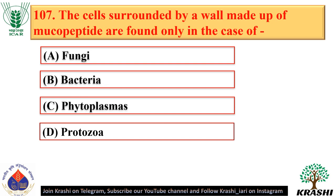Question number 107. Cells surrounded by a wall made up of mucopeptide are found only in bacteria — option B.